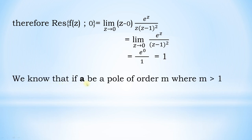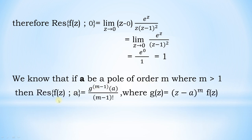We also know that if a is a pole of order m, where m is greater than 1, then the residue of f(z) at a equals g^(m−1)(a) divided by (m−1)!, where g(z) = (z−a)^m · f(z).